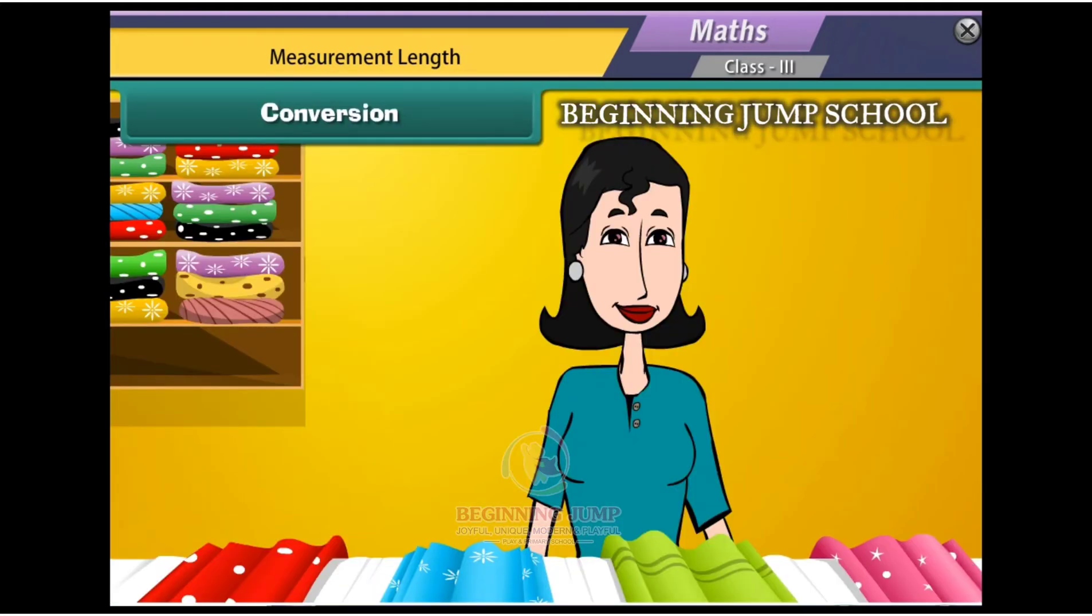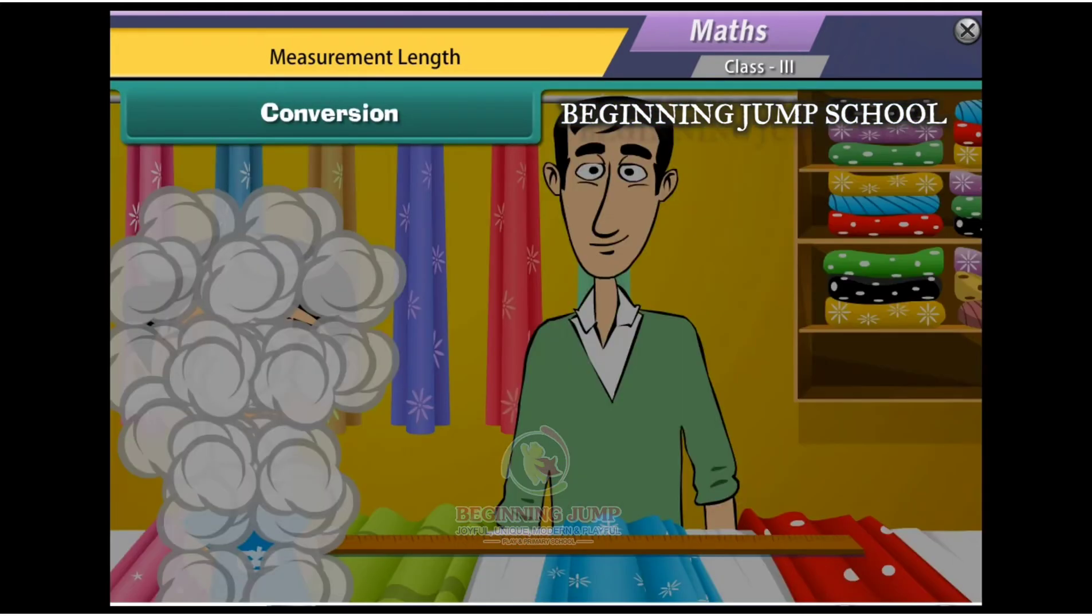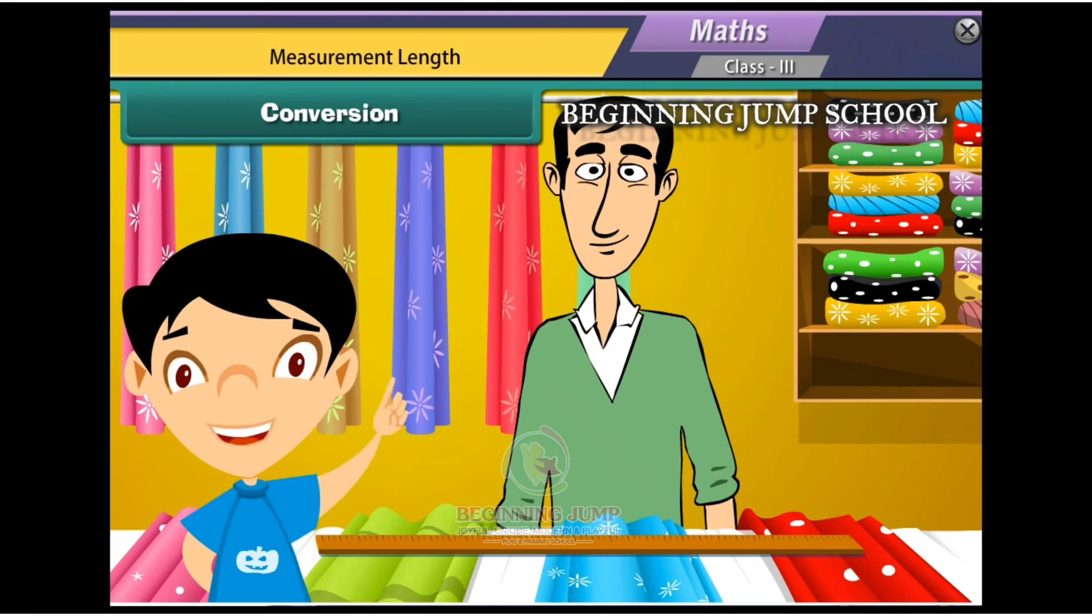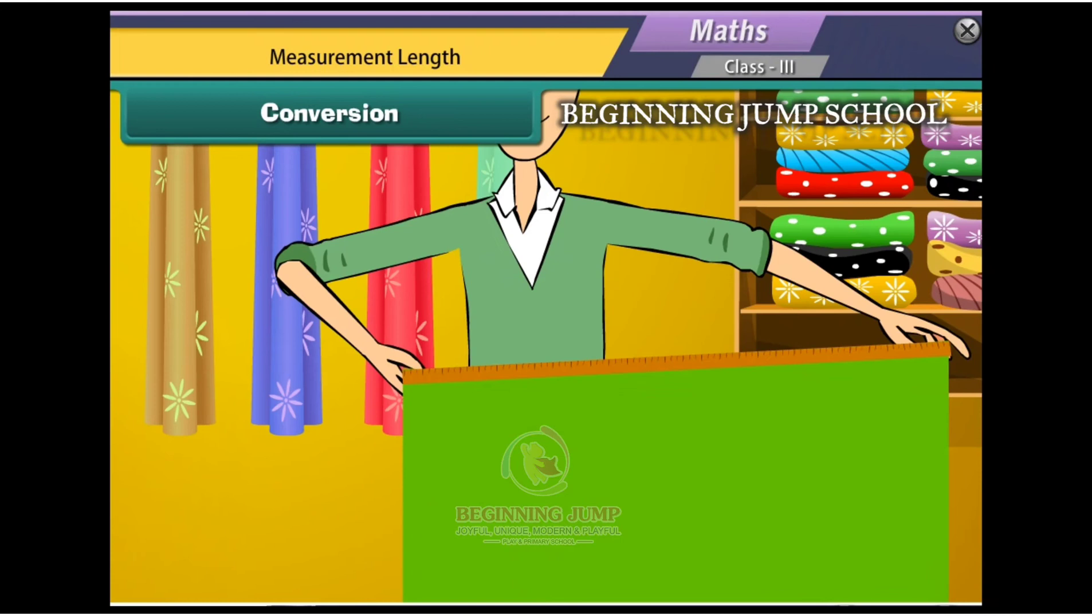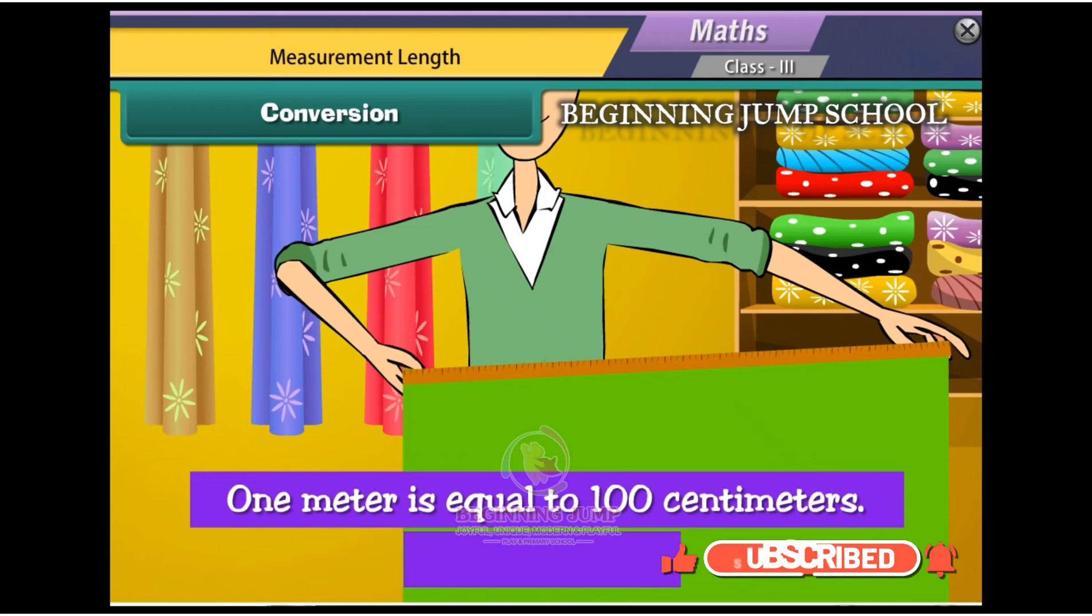Your mother is in market to buy shirt cloth. Can the shopkeeper measure a shirt piece with a ruler? Yes he can measure, but the work would be tedious and time consuming. He measures it with the help of metric tape. It will take less time and less effort. One meter is equal to 100 centimeters.